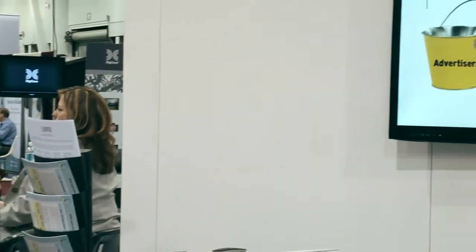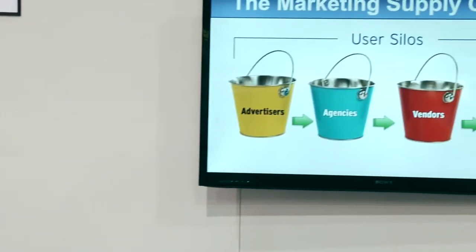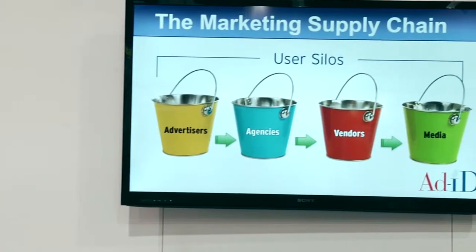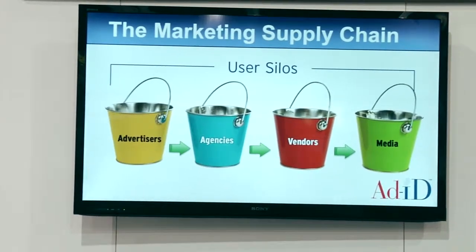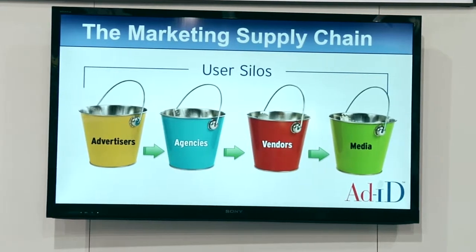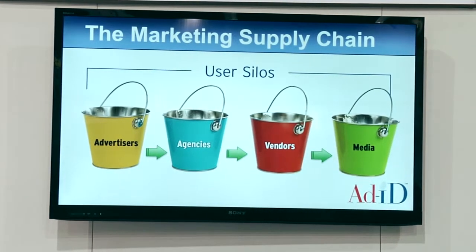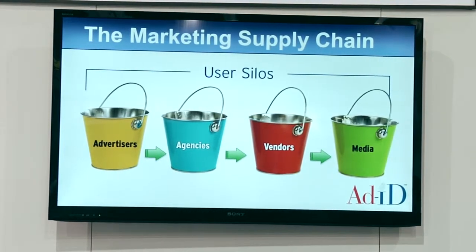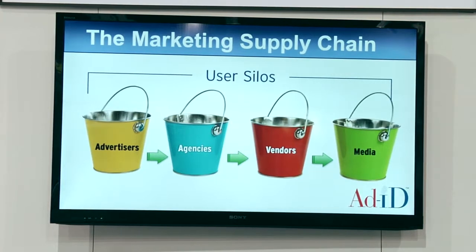Advertisers and agencies, on the other hand, haven't. And if you take a look at the marketing supply chain, it goes all the way from the front of the supply chain — an advertiser — all the way to the media. The reality is vendors in the media understand fully digital file-based workflows. Agencies and advertisers don't.